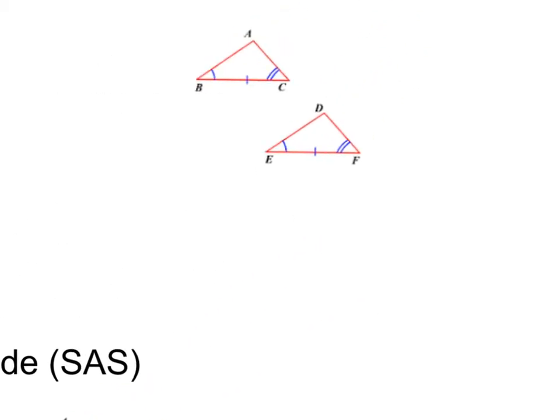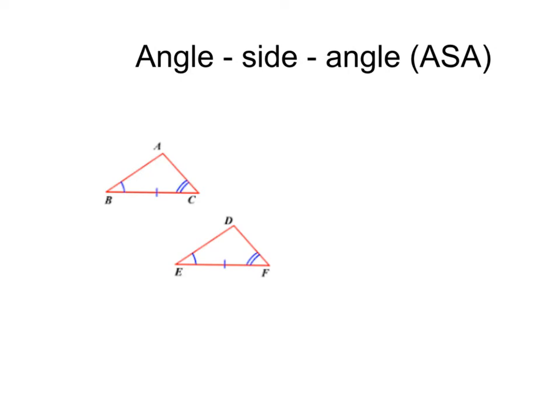Let's continue on. Here we've got our angle-side-angle congruence theorem. This, you may guess, is when we have an angle, a side, and an angle congruent to an angle, a side, and an angle. Whenever this happens, you got it, these two triangles are congruent.